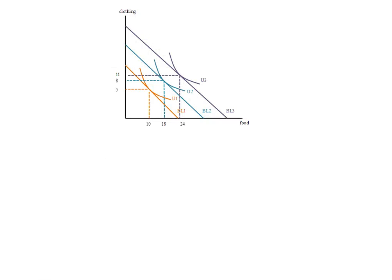Here's the diagram we created in our last screencast. As our income increased from 40 to 68 to 92, we saw our budget line shift out. We were holding price of food and clothing constant this whole time.